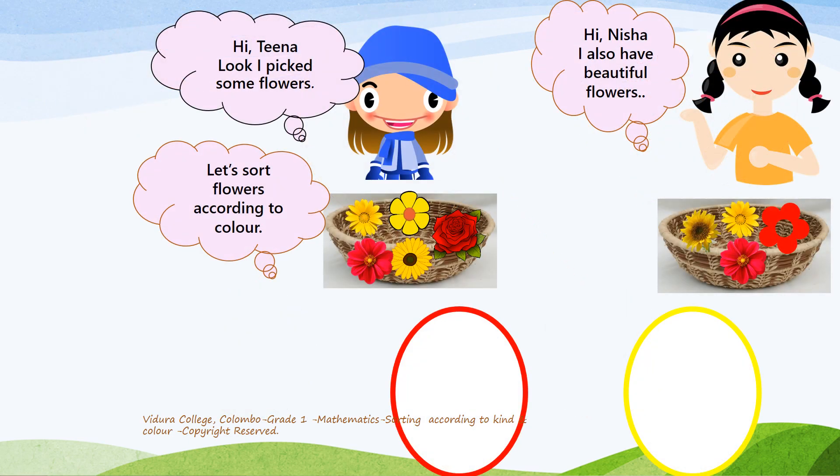I hope you could understand sorting according to kind. Look here — there are two little friends. They picked beautiful flowers and they want to sort them. But children, we have only flowers here, not two or three different objects. How will we sort them? We have only flowers, but there is a small difference: the flowers are in different colors.